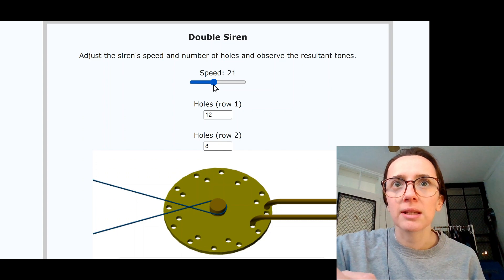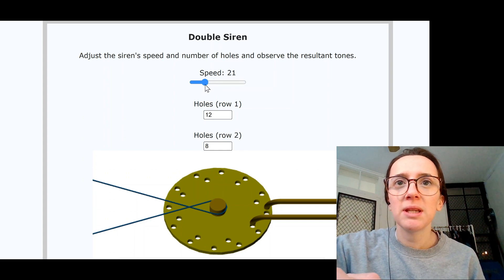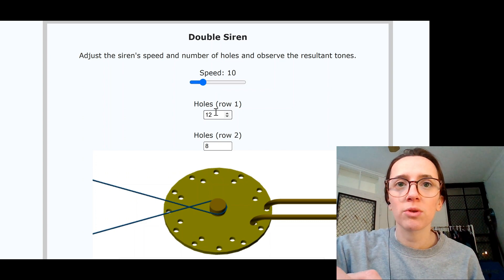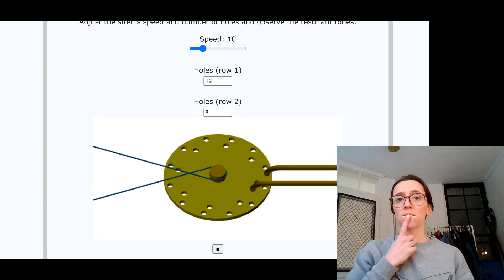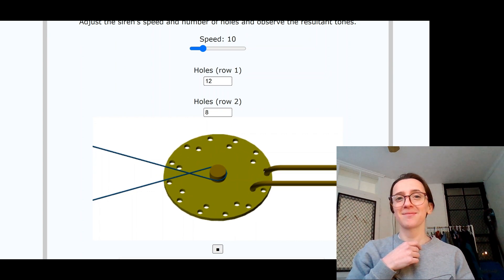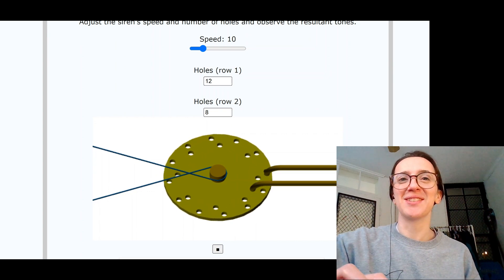Let's set it up exactly the way he says. Speed 10, 12 holes in row 1, 8 in row 2. Pretty cool, let's speed it up.